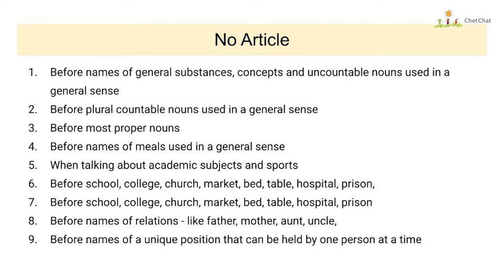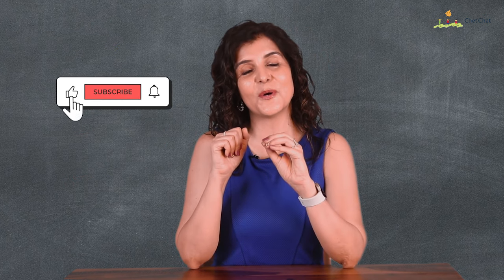No article is used before names of relations like father, mother, aunt, or uncle: father is unwell and aunt wants you to meet her. Articles are not used before the names of a unique position held by one person at a time: he has become chairman of the board; he became principal of the college in 2020. Here is a full list of all eight use cases of no article — take a screenshot. That is the full masterclass on articles. Write any questions in the comment section, practice more, and happy learning!